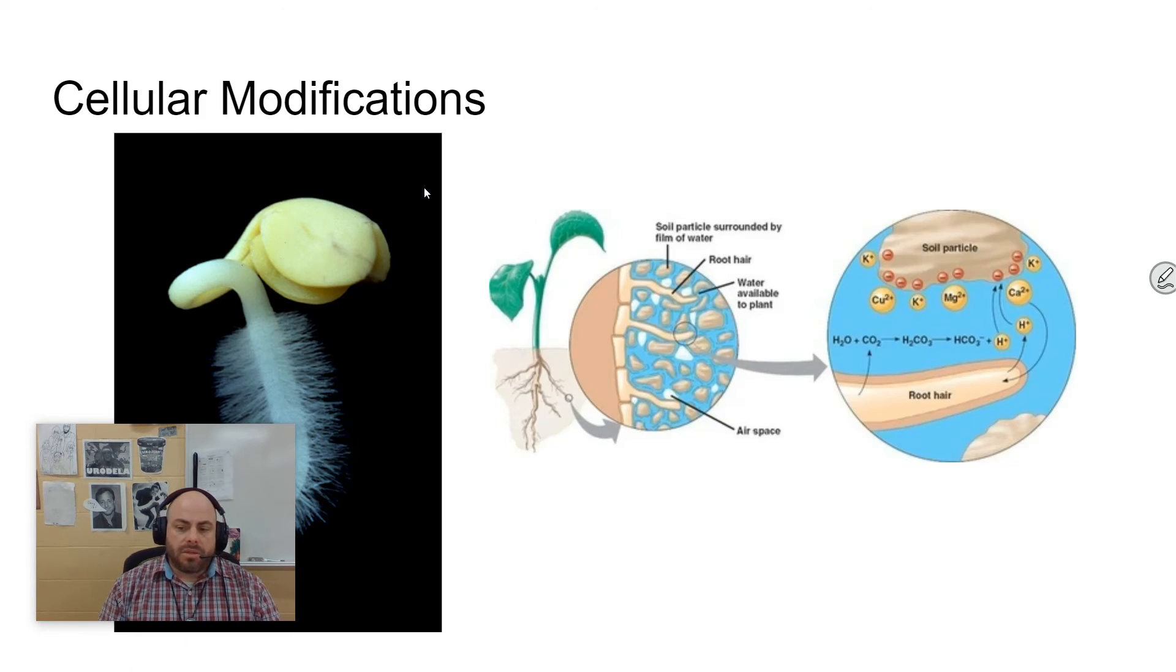So there are certain modifications that have been made to create this surface area to volume ratio, not only at the cellular level, but also at more of a macroscopic level. Here you see plants produce something called root hairs. These increase the surface area, allow water and nutrients to flow in and out of the plant much more efficiently than they would have if this area of this plant was just simply smooth.